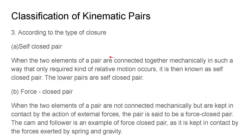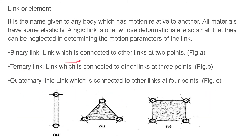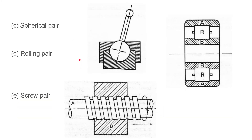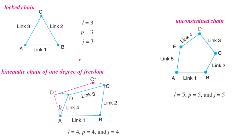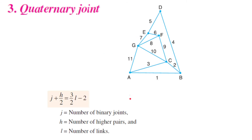We previously saw the types of links: binary, quaternary, and tertiary links. Now we'll see the classification for joints. A binary joint is when two links are joined at the same connection. A tertiary joint is when three links are connected at the same connection — for example, joint e makes a tertiary joint.